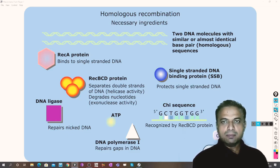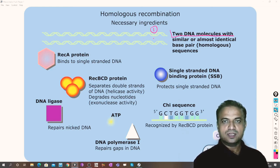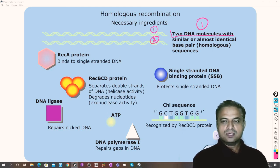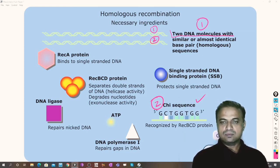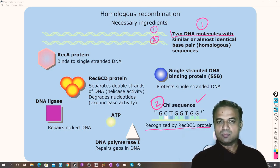The prime requirement for homologous recombination is two DNA molecules with similar or almost identical base pairs. The second requirement is a chi sequence on the DNA — specifically 5'-GCTGGTGG-3' — which is very specific for and recognized by the RecBCD protein.